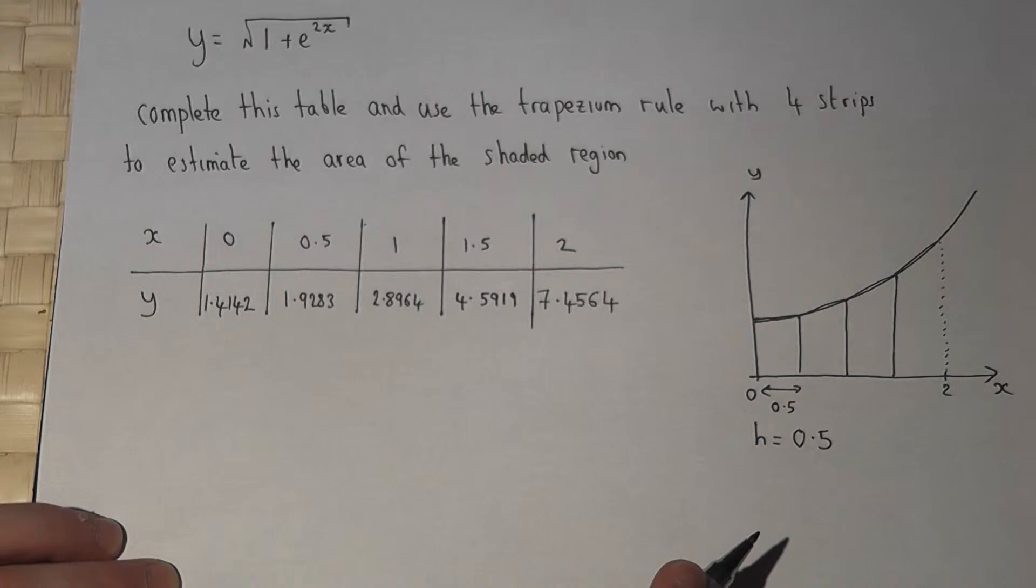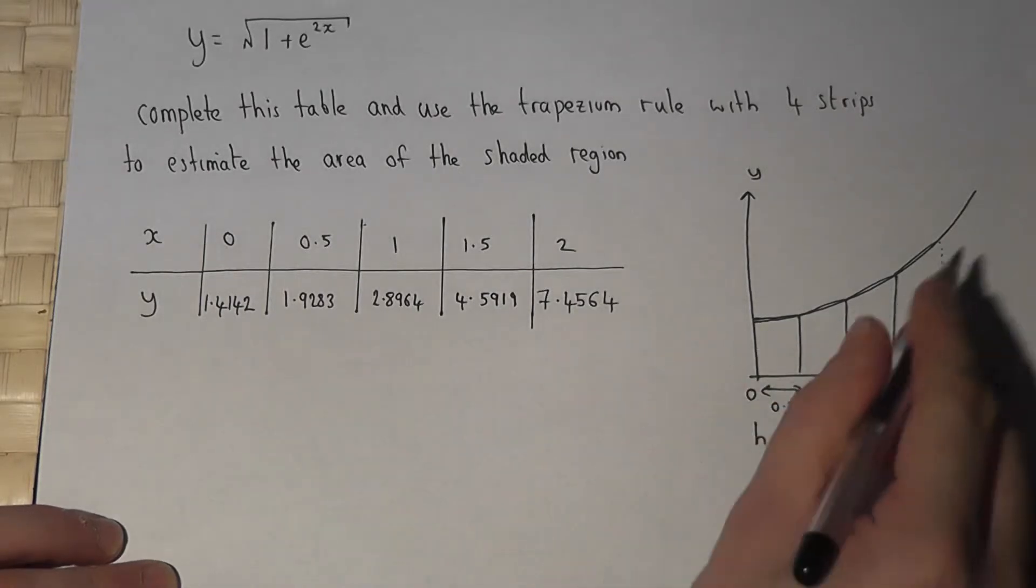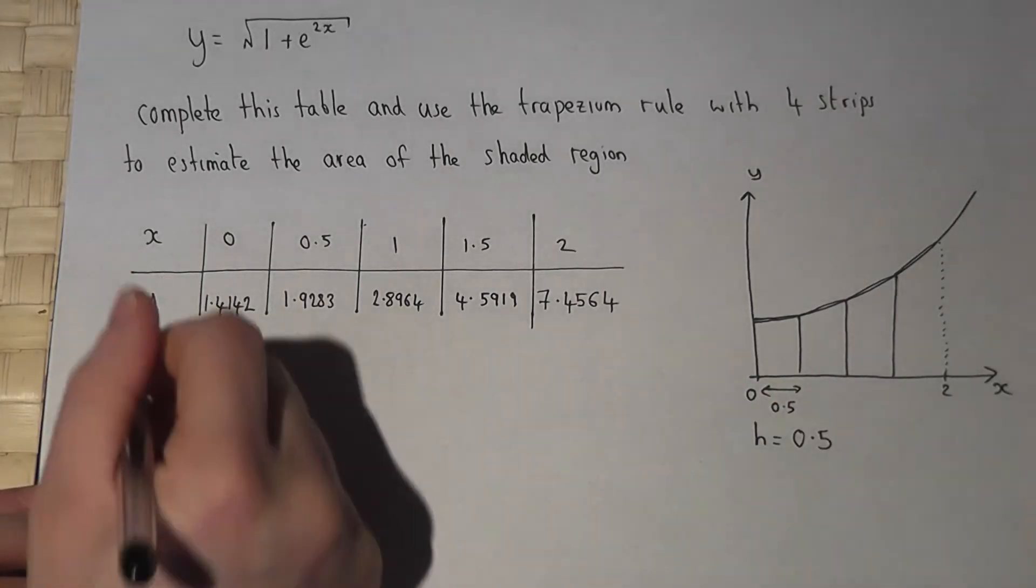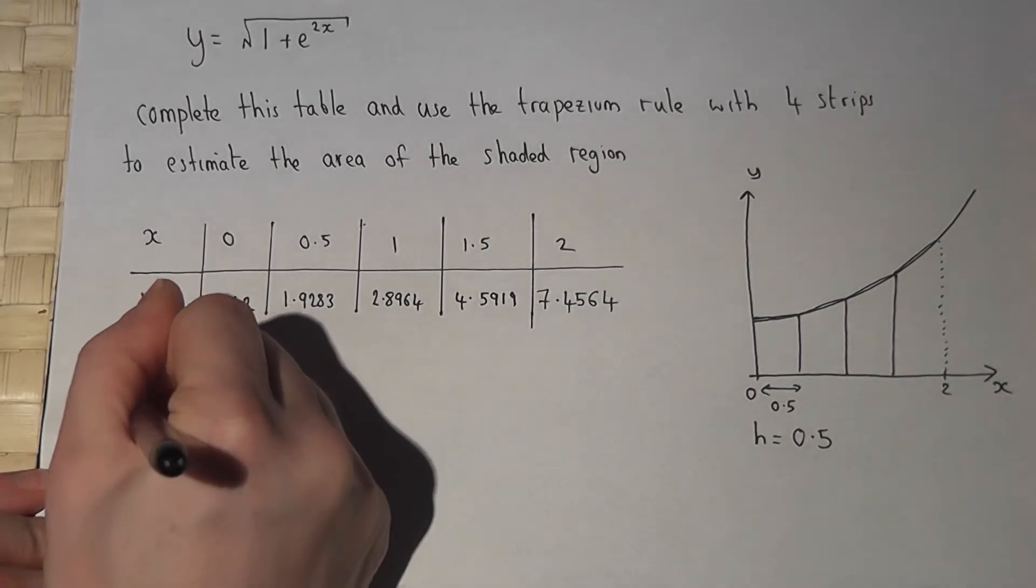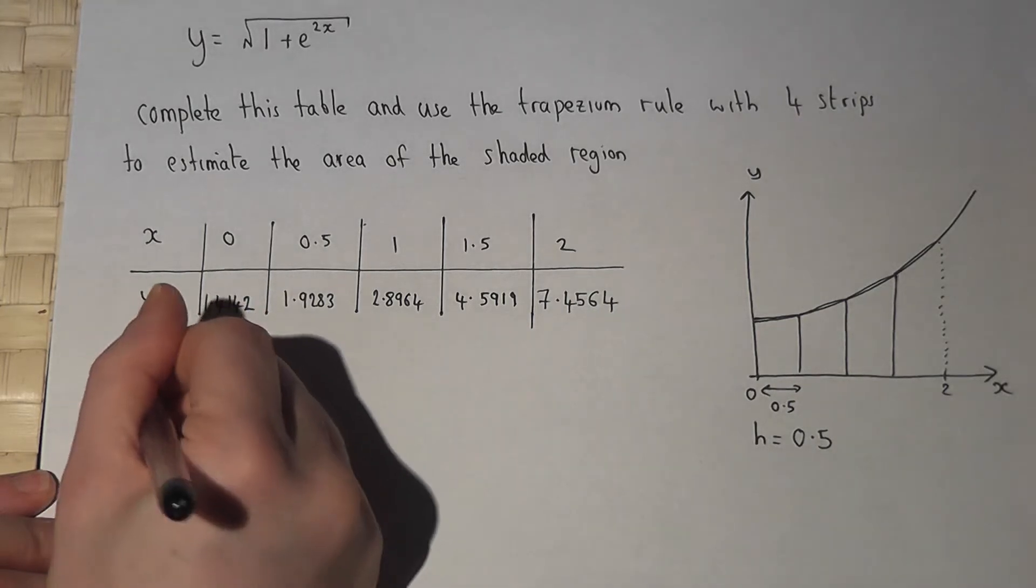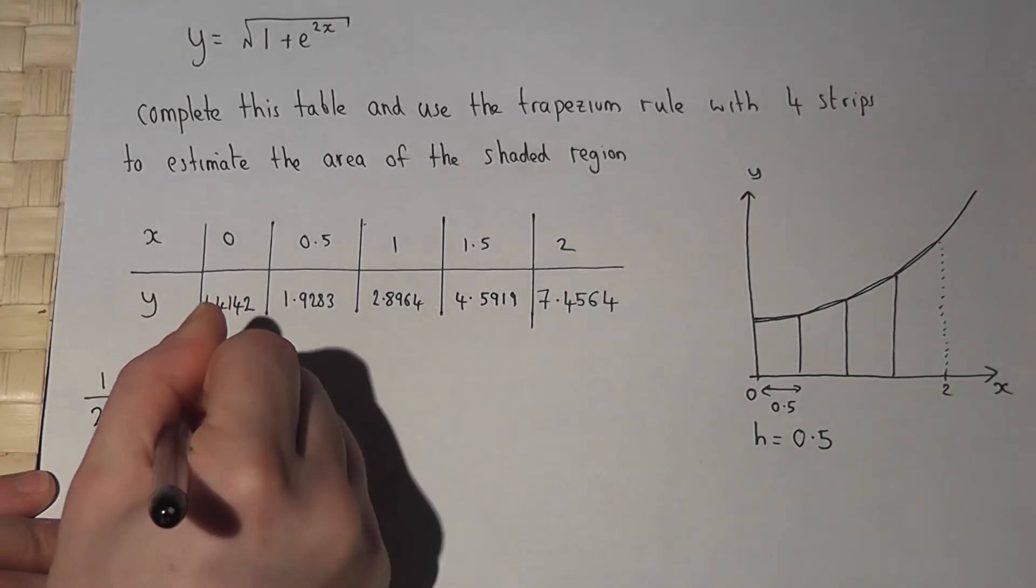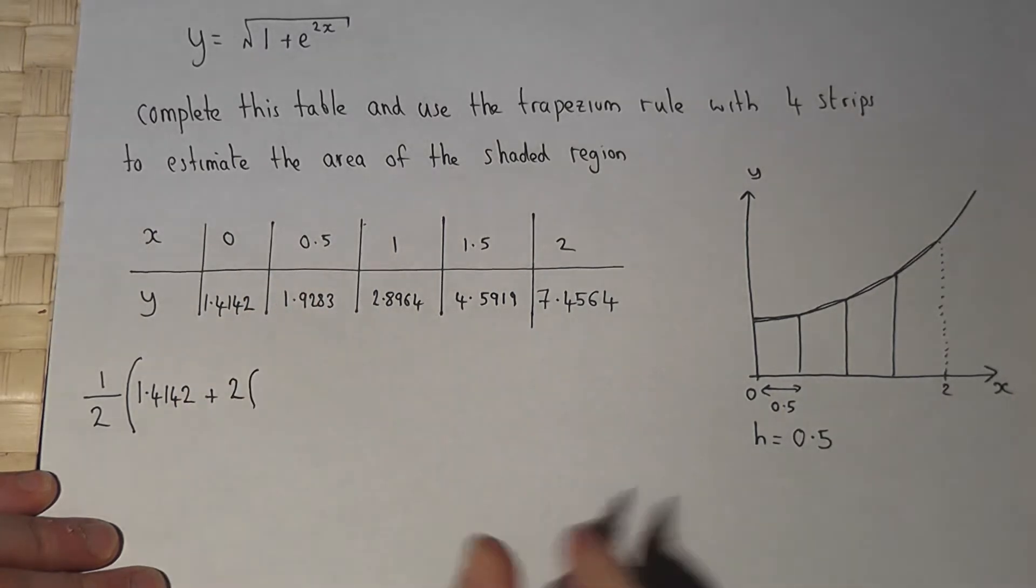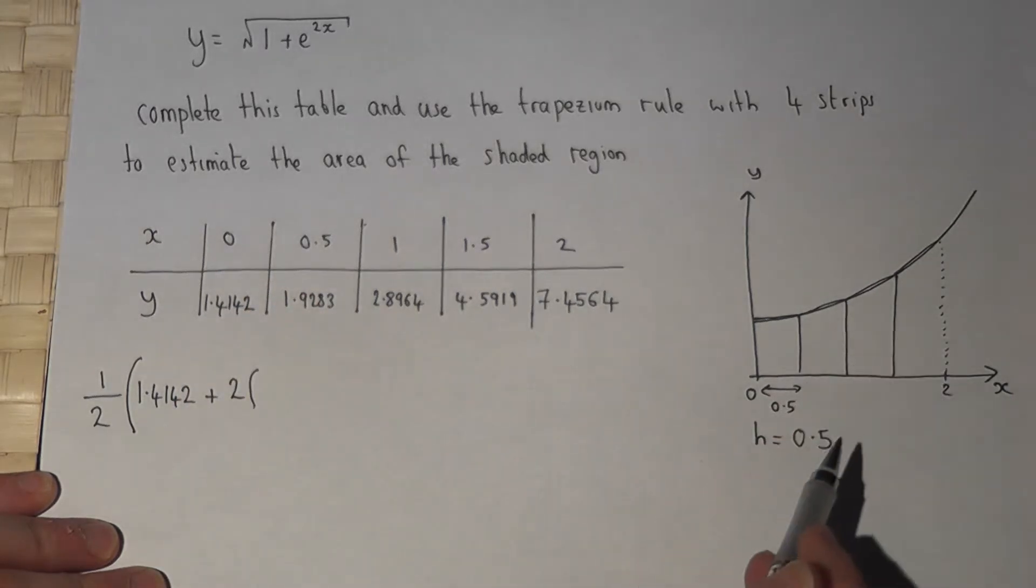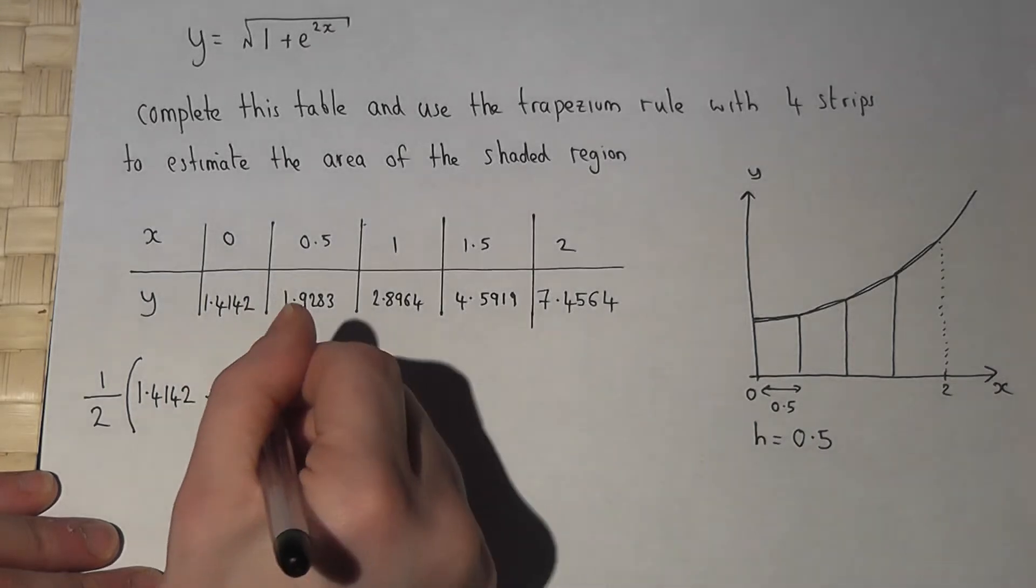Now then, here's what the trapezium rule says. To find the total area, the general formula is it's a half, now then the first height which is 1.4142, plus twice because each of these heights in the middle occur in two trapeziums, 1.9283 plus 2.8964 plus 4.5919.